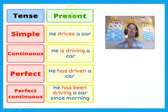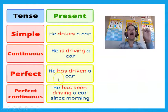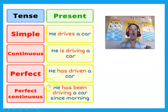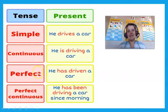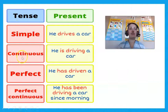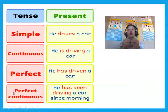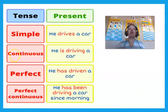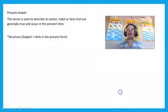Let me tell you a secret. Present perfect: 'He has driven a car.' Or you get present perfect continuous tense: 'He has been driving a car since this morning.' So when you talk about the present tense, you get simple, continuous, perfect, and perfect continuous. For present tense, you will always use these forms. Okay, let's go on.